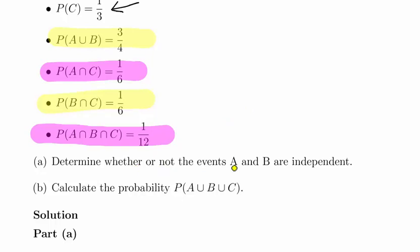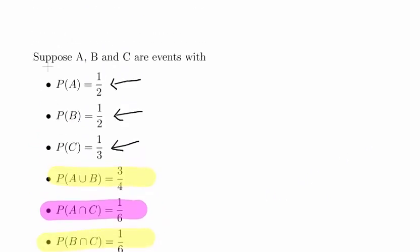Determine whether or not the events A and B are independent. And then calculate the probability of A union B union C.